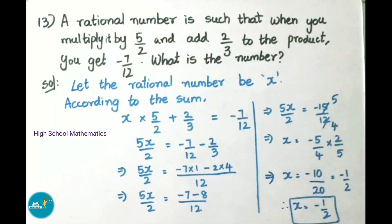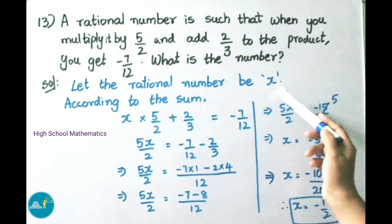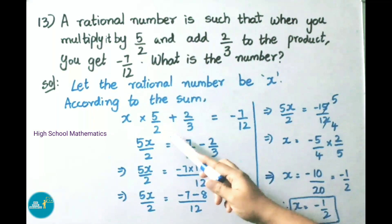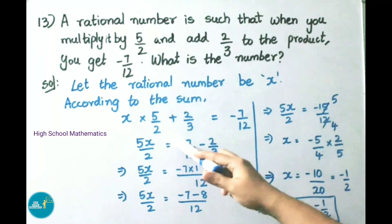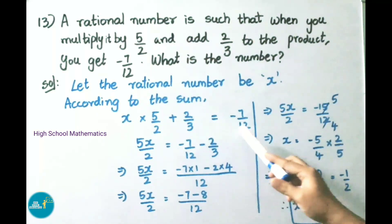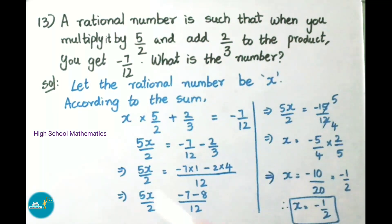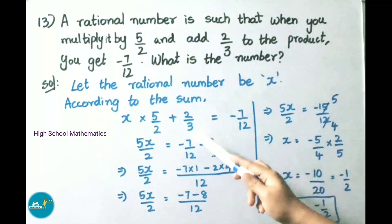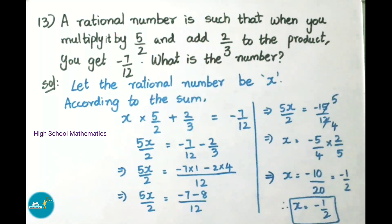Let us see the solution. Let the rational number be x. According to the sum, this rational number is multiplied by 5/2. Then to that product, we add 2/3. It will give us minus 7/12. So we write: x times 5/2 plus 2/3 equals minus 7/12.